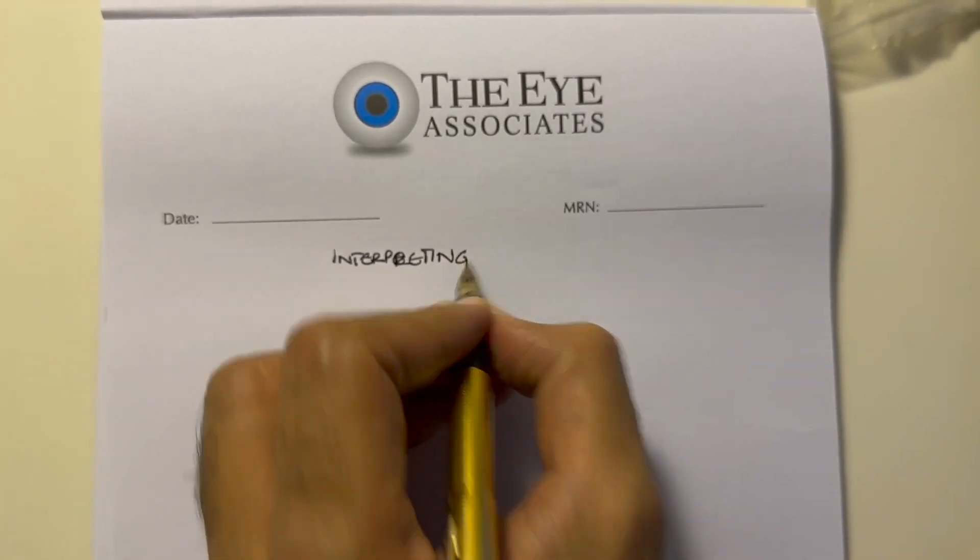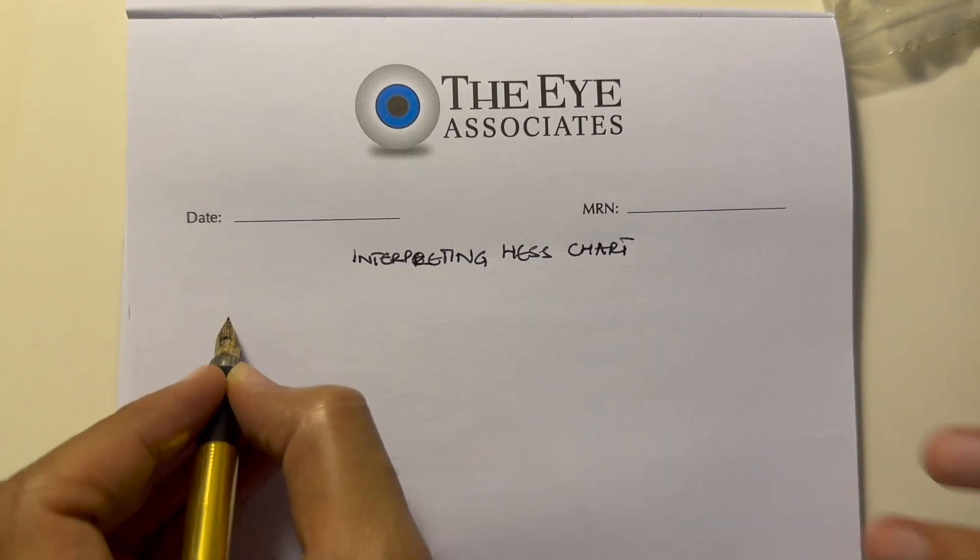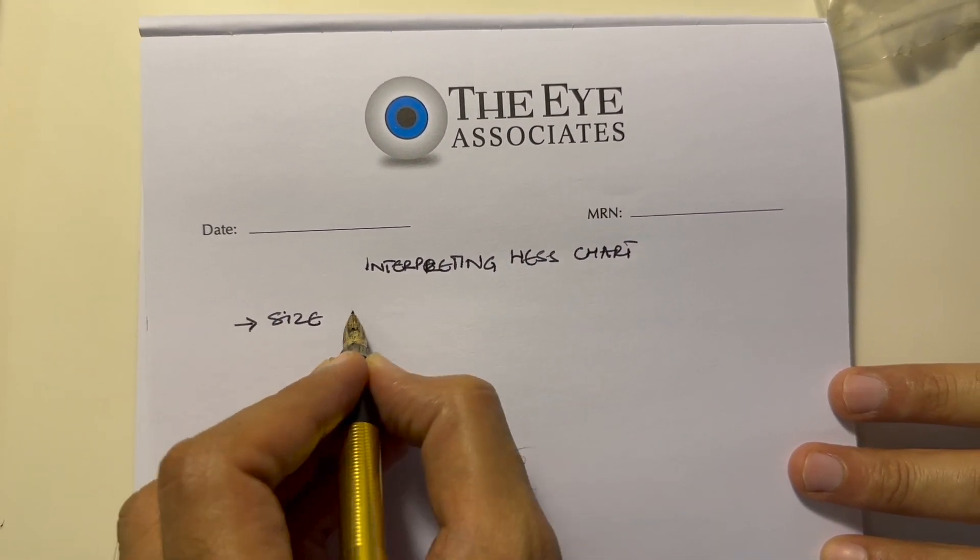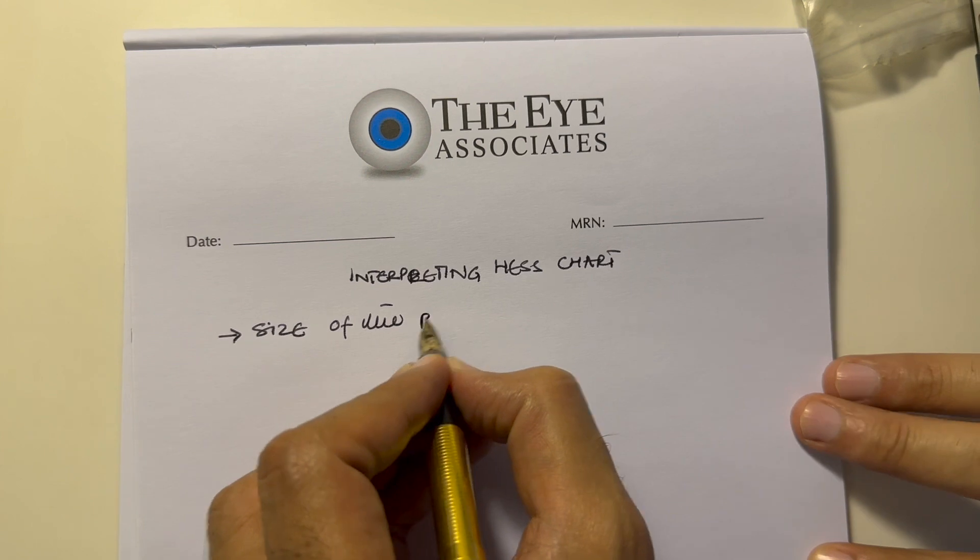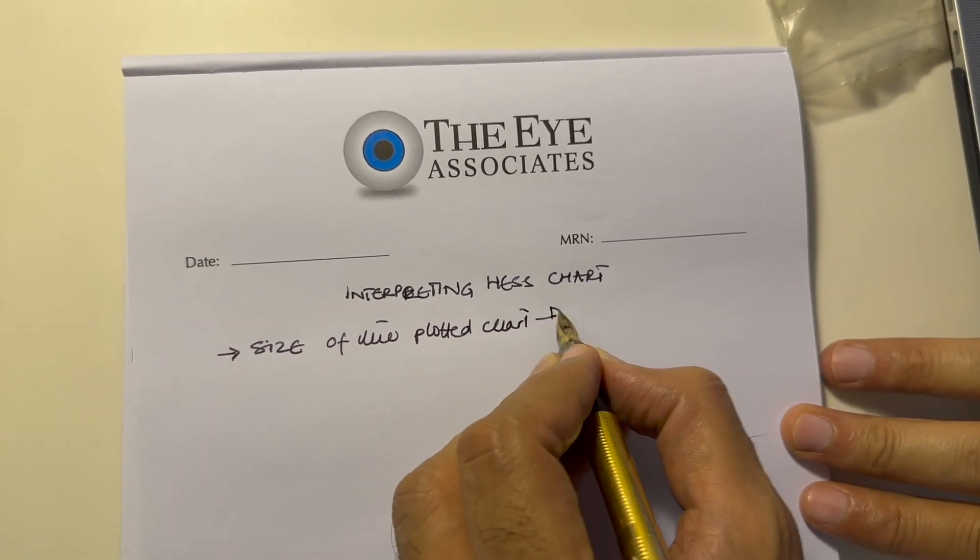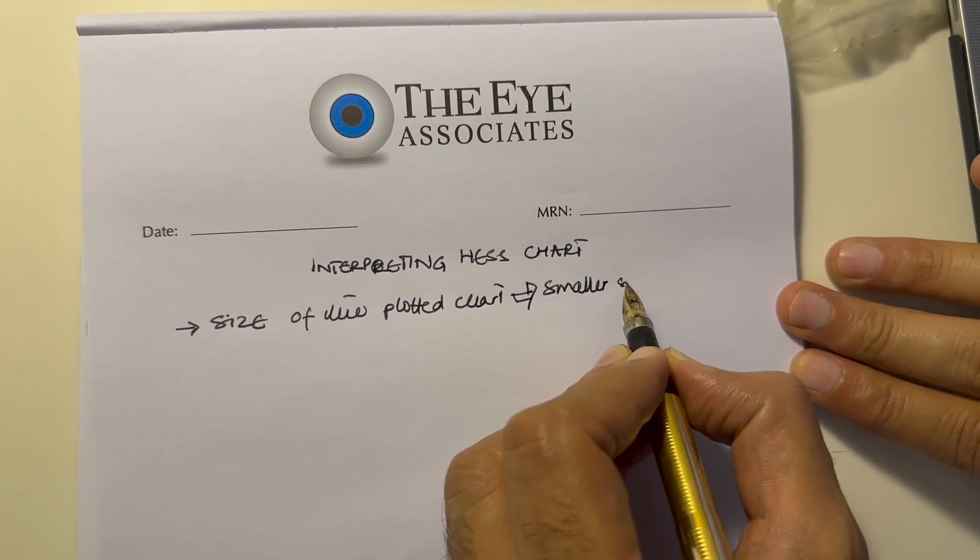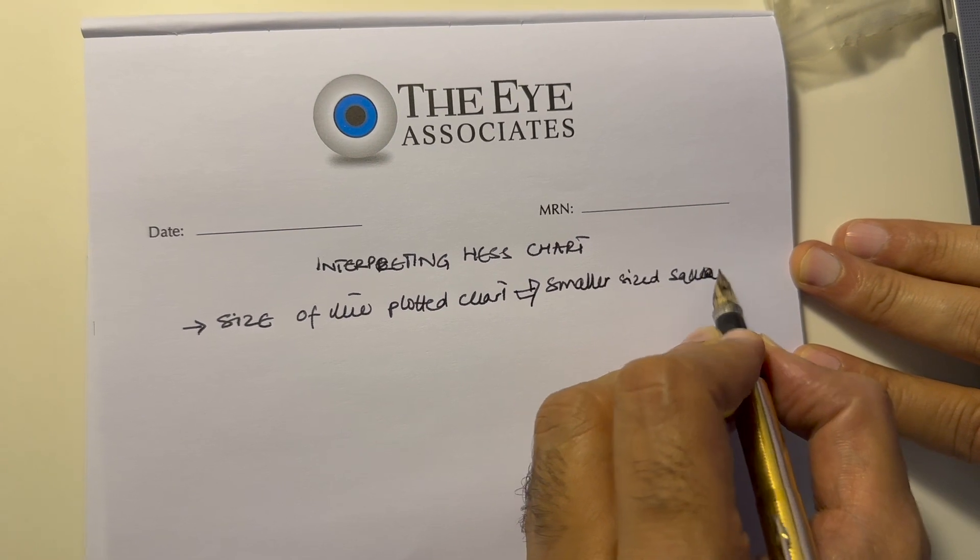The way to interpret the Hess chart is by focusing on a few things. The first thing that you focus on is the size of the plotted chart. Whichever eye will show a smaller sized square, that is the eye which is the diseased or affected eye.